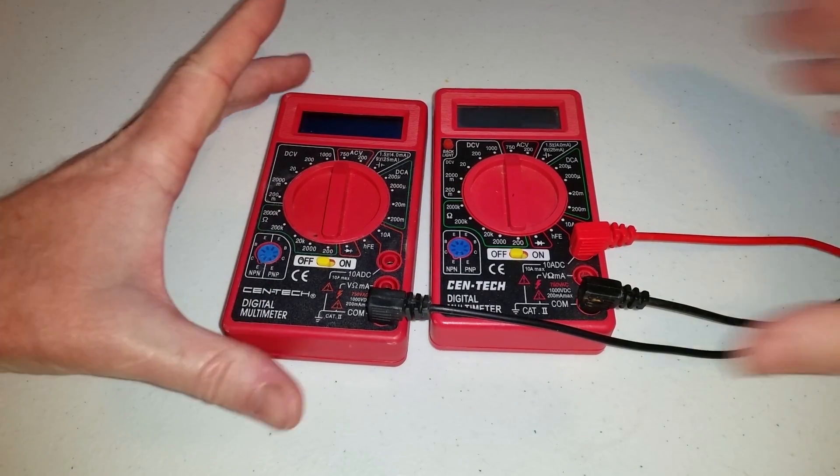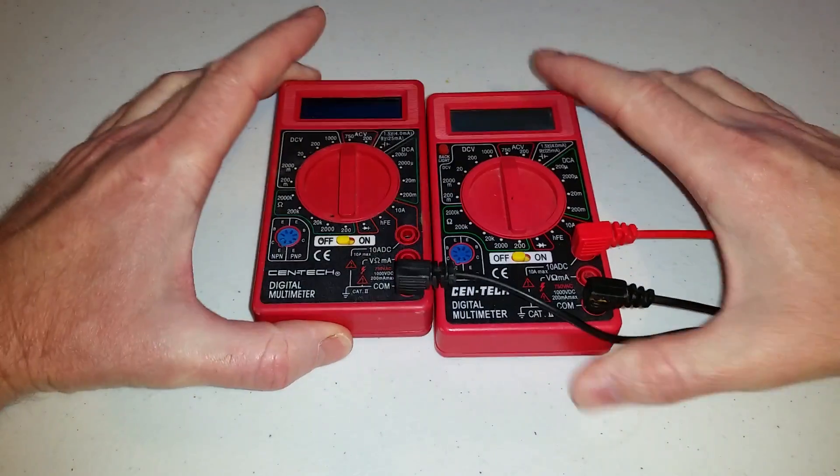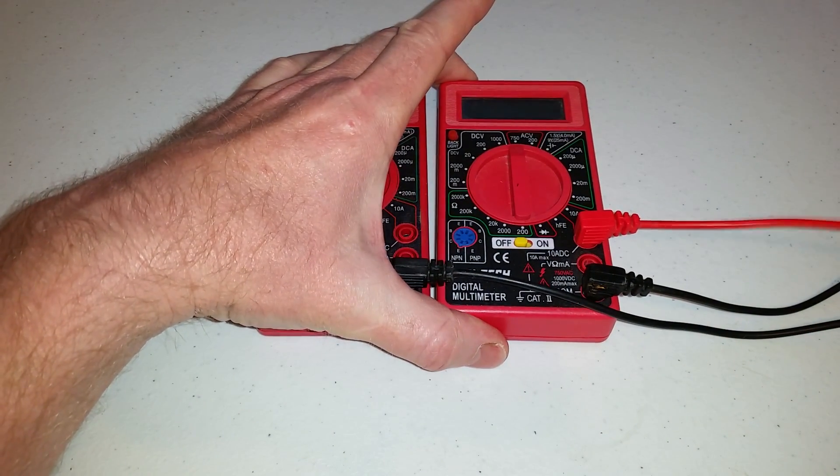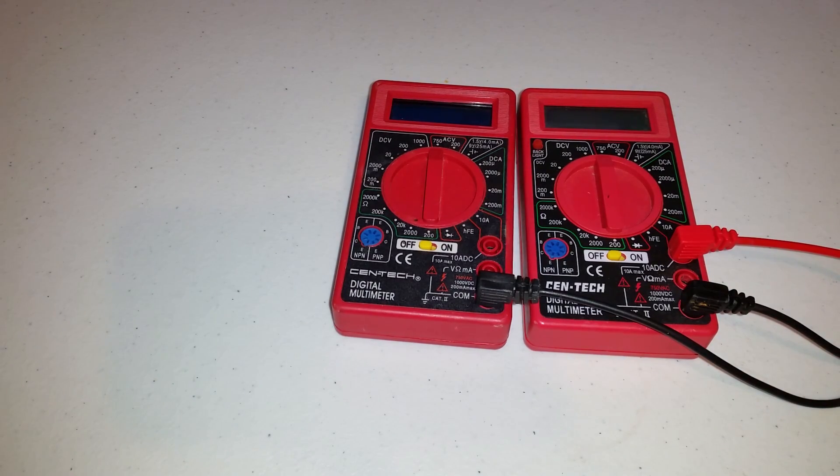So I have these two Harbor Freight Syntec digital multimeters. I got them for free with a coupon. Normally these cost about $9, $10.